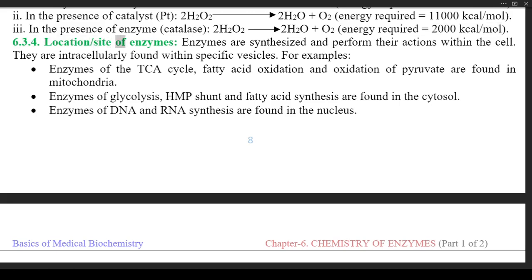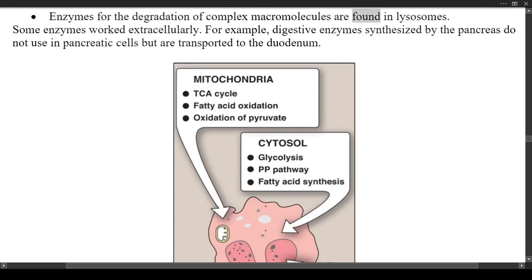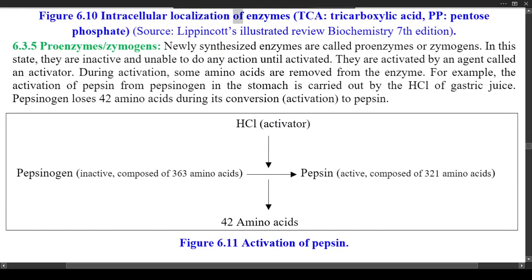6.3.4 Location/Site of Enzymes — enzymes are synthesized and perform their actions within the cell, found within specific intracellular vesicles. For example: enzymes of the TCA cycle, fatty acid oxidation, and oxidation of pyruvate are found in mitochondria; enzymes of glycolysis, HMP shunt, and fatty acid synthesis are found in the cytosol; enzymes of DNA and RNA synthesis are found in the nucleus; enzymes for degradation of complex macromolecules are found in lysosomes. Some enzymes work extracellularly — for example, digestive enzymes synthesized by the pancreas are transported to the duodenum. Figure 6.10 shows the intracellular localization of enzymes (TCA = tricarboxylic acid; PP = pentose phosphate). Source: Lippincott's Illustrated Review Biochemistry, 7th edition.